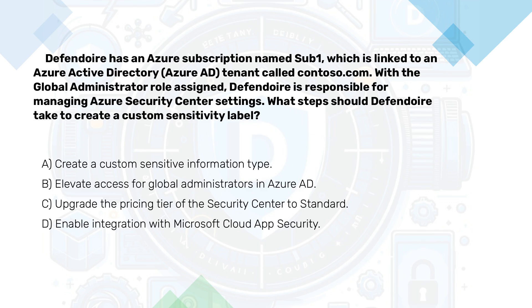We have an Azure subscription which is linked to an Azure Active Directory tenant. With the Global Administrator role assigned, we are responsible for managing Azure Security Center settings. What steps should we take to create a custom sensitivity label?